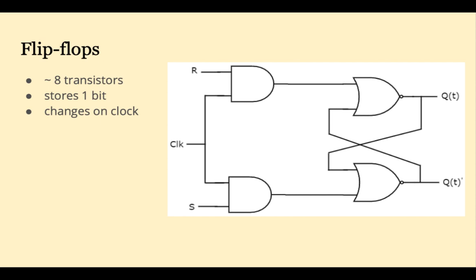Here's a diagram of a simple flip-flop that can store one bit of information. It takes about eight transistors to construct this, and it will only change on the clock cycle.